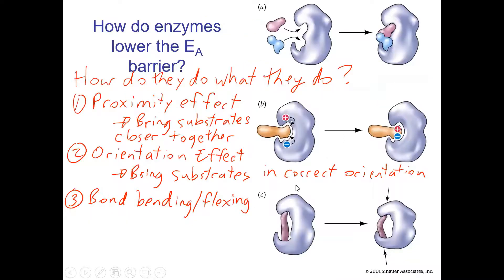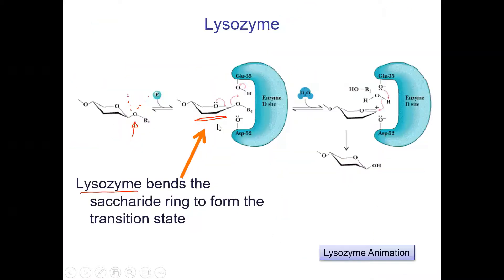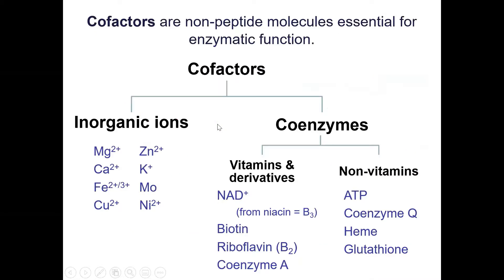Remember these three things about how enzymes do what they do: they bring things close together, they orient them in the correct orientation for a reaction, and there's some bond wiggling, flexing, or bending that helps bring the reaction to completion. There are more answers at higher levels of study, but this is what we cover here.